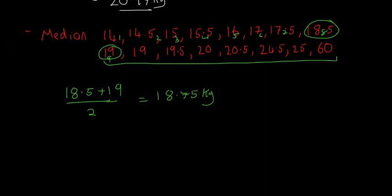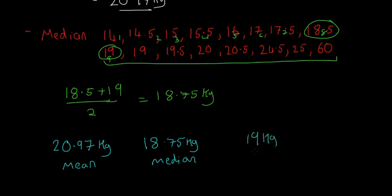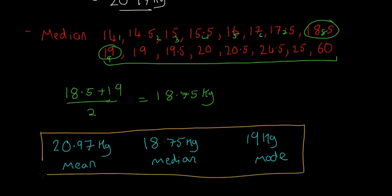So next thing to do is to look at all the values and to decide which one is best. So we have 20.97 kilograms is the mean. We have 18.75 kilograms is the median. And we have 19 kilograms is the mode. So the first thing you'll notice is that they're all really similar. So sometimes in statistics, there isn't really a clear cut answer.